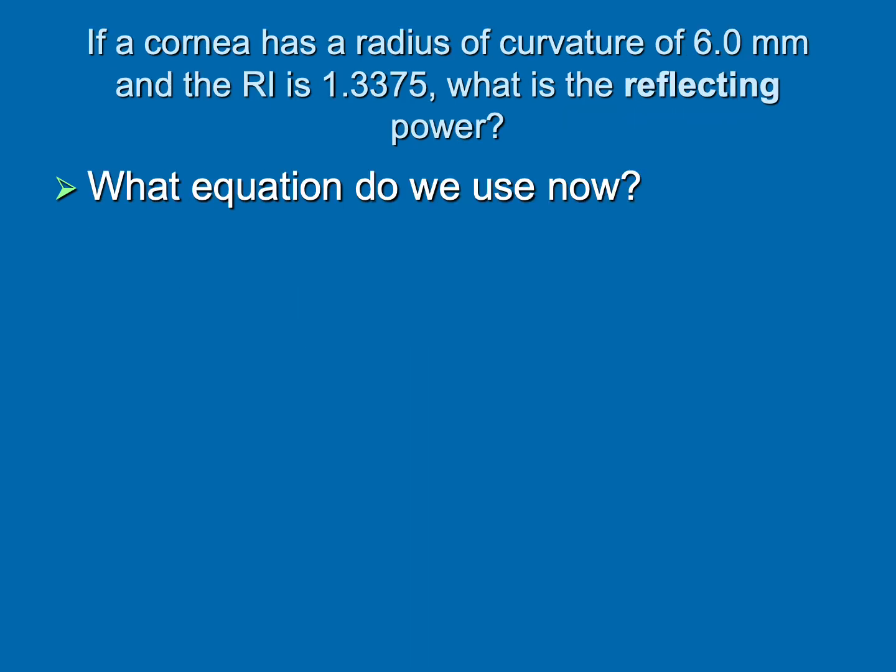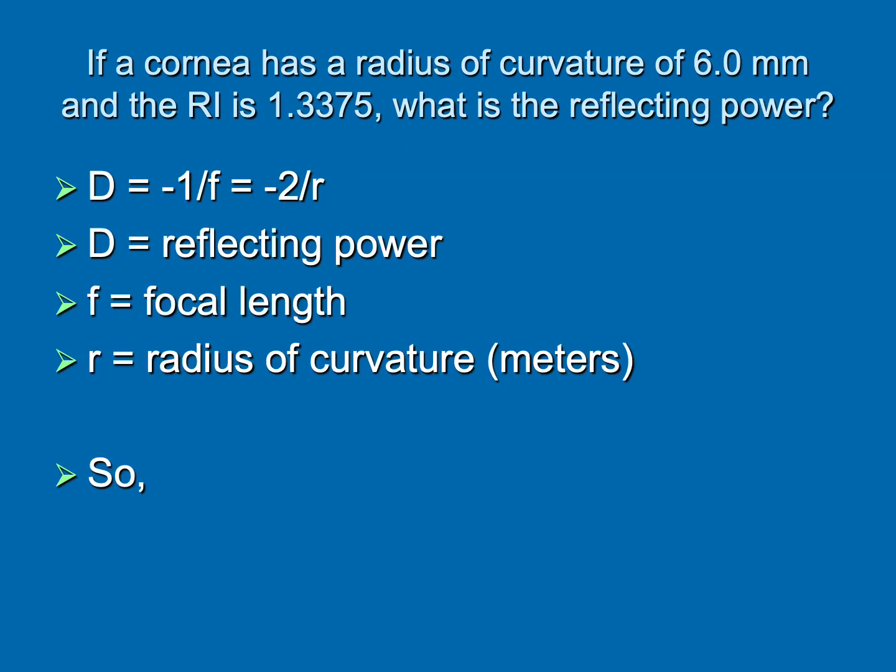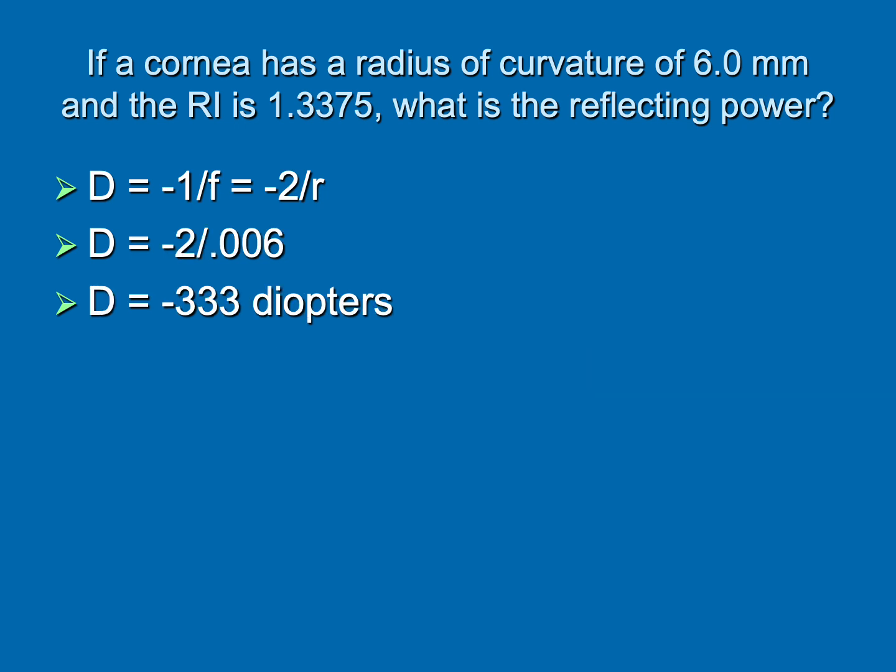But now we're going to change it up. I'm going to give you the same cornea, but I'm going to ask, what's the reflecting power? So what equation do we need for the reflecting power of a surface? And once again, here it is. We're going to use either the radius of curvature, which it's giving us at six millimeters, or we're going to use the focal length. We know that the focal length is one half of the radius of curvature. So we could use three millimeters and use minus one over F, or we could use six millimeters and go minus two over R. Either way we go, we've got to convert that into meters. And when we put the math to it, we see that the reflecting power of this cornea is minus 333 diopters.